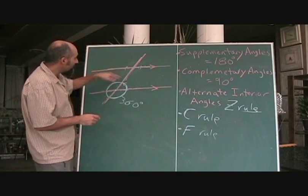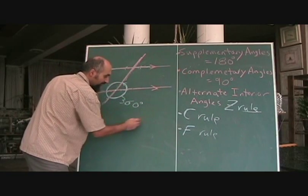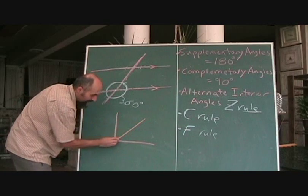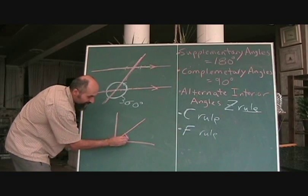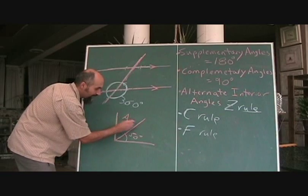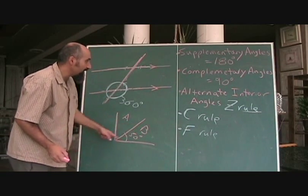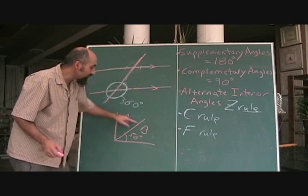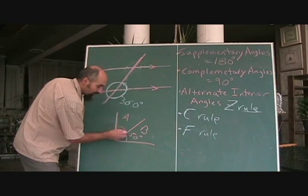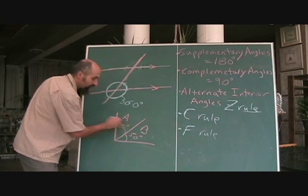We don't have a complementary example here, but keep it in mind. If they give you a right angle triangle and say this angle is 50 degrees, and angles A and B are complementary, then you know they add up to 90 degrees. So angle B must be 90 minus 50, which is 40 degrees.